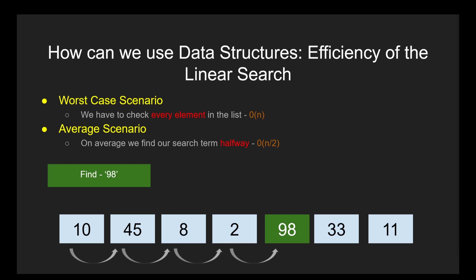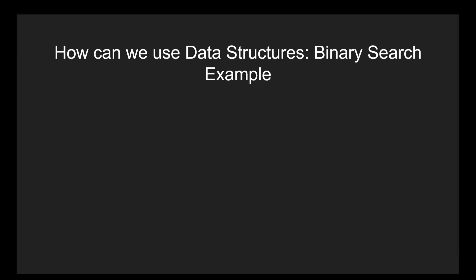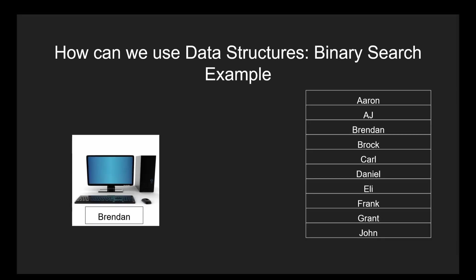Such as the binary search we will be talking about now. The binary search uses a recursive process to break the data in your list down into more and more manageable pieces, taking advantage of the fact that it's sorted in order to find the item you are looking for faster. This one is much harder to wrap your head around, so let's start with an example. Let's say you have a list of 10 names sorted alphabetically, like shown on the screen now.